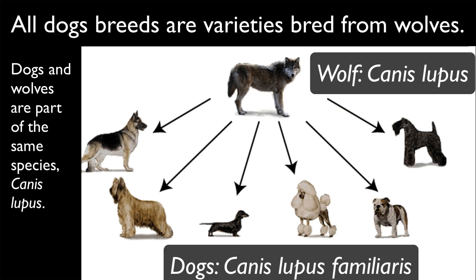The same is also true of dogs. Dogs and wolves are all members of the same species, Canis lupus. All breeds — German shepherds, schnauzers, dachshunds — are varieties that have been bred for specific human purposes: for protection, for hunting, or for just looking cute and being cuddly.